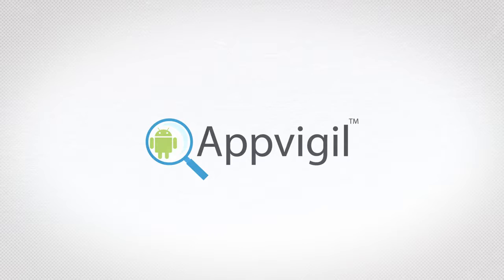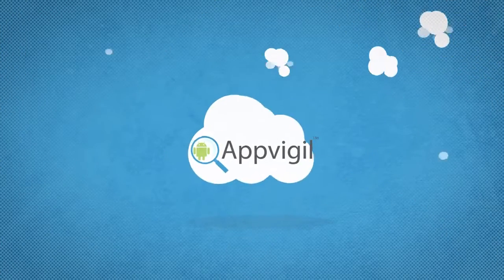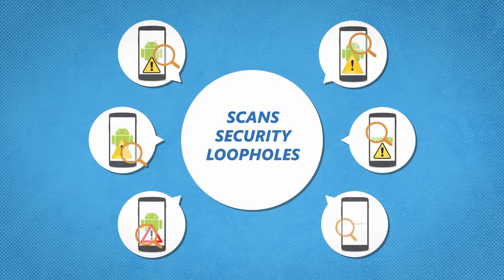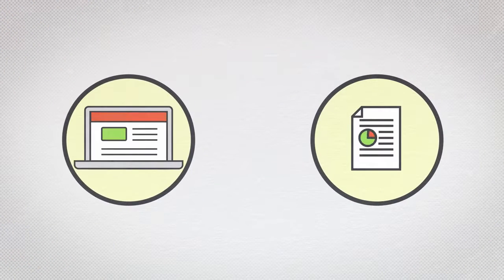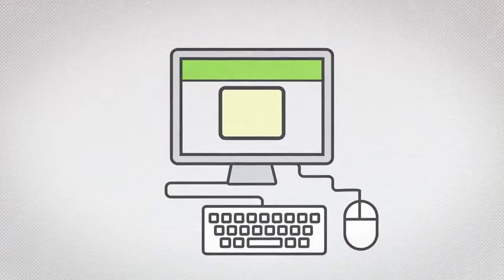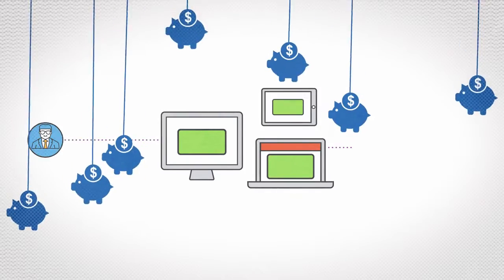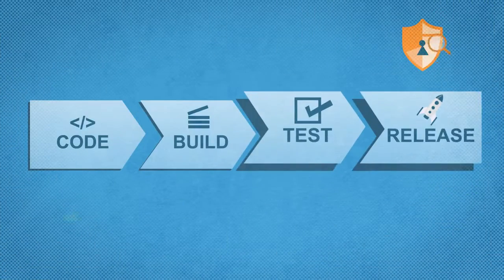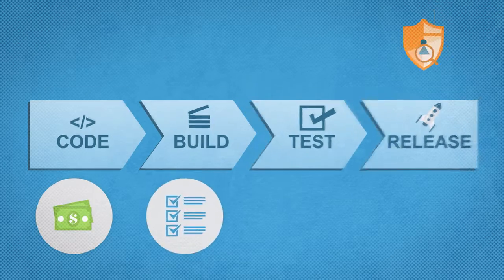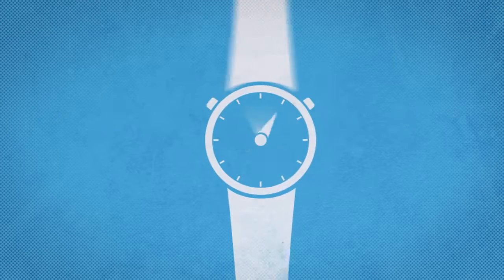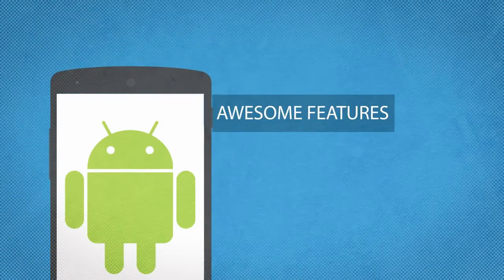Introducing AppVigil. AppVigil is a cloud-based Android app security scanner that scans security loopholes in your Android apps. It helps you identify security and privacy vulnerabilities during the app development lifecycle and reduces the chances of being damaged in production level, where the cost of recovery is huge.